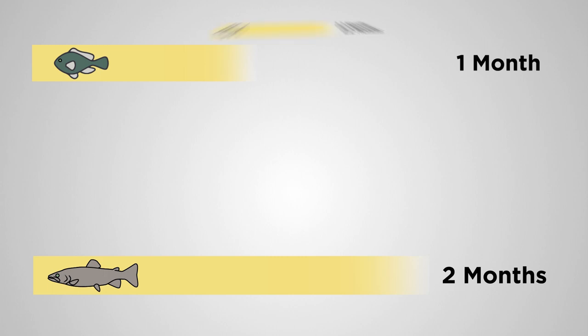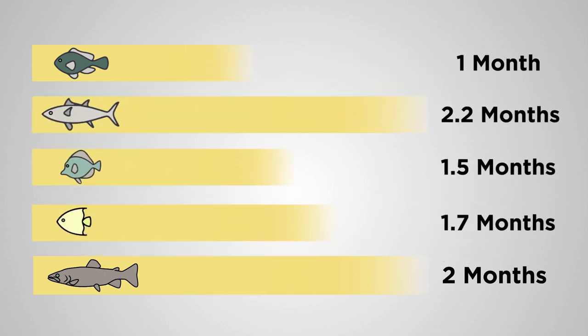Fish are poikilothermic, meaning that the body temperature varies depending upon the water temperature. Many other factors change the rate at which healing occurs.